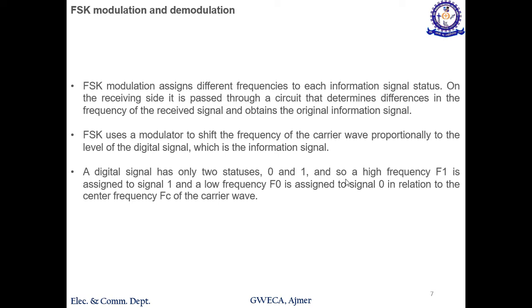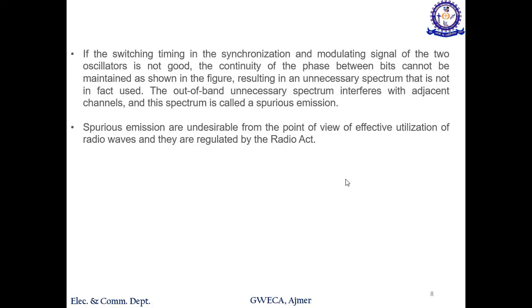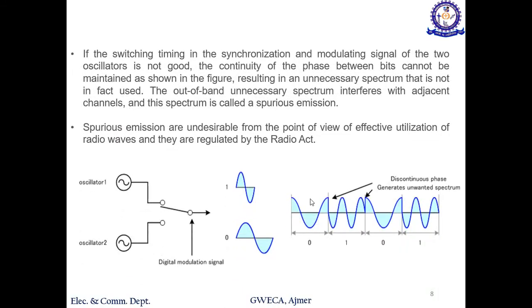Whenever the signal is one, a high frequency is assigned, and whenever the signal is zero, then low frequency is assigned. If the switching timing in the synchronization and modulation signal of the two oscillators is not good, for example there is a modulator with oscillator one and oscillator two. If the switching time of this digital modulation is not properly aligned or properly matched, what will happen? These oscillators operate at different frequencies. Because of this you will get discontinuous phase whenever your signal is changing, resulting in spurious emission. Spurious emissions are undesirable from the point of view of effective utilization of radio waves and are regulated by radio authorities.